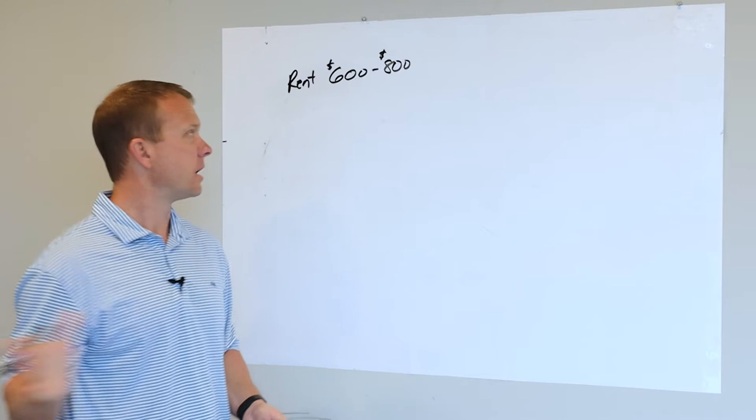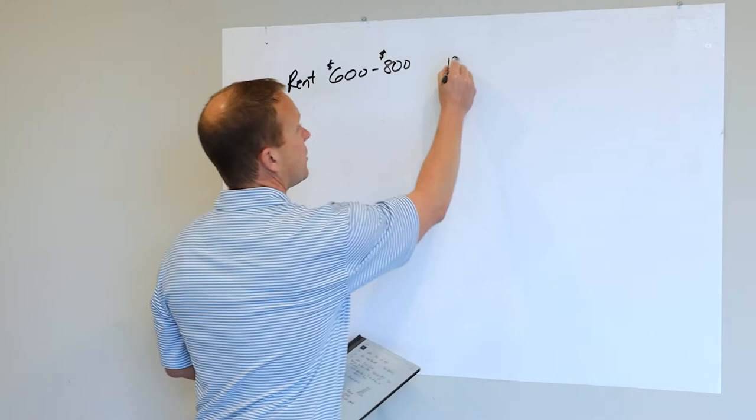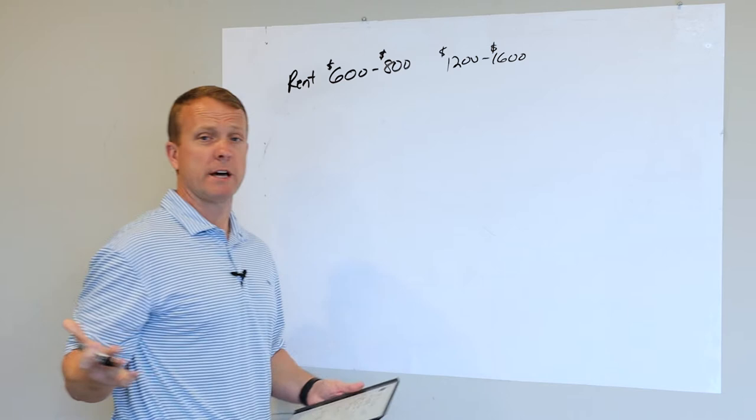Now there are possibly some cheaper options, but there's not going to be much. That's kind of what you're going to be looking at for something decent for a student, which translates to $1,200 to $1,600 for a two bedroom unit. And I'm going to use a two bedroom as an example today.